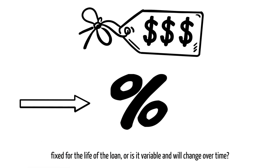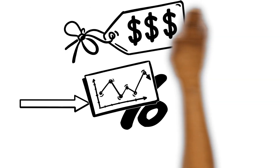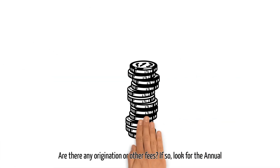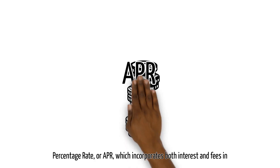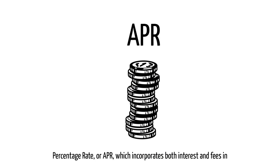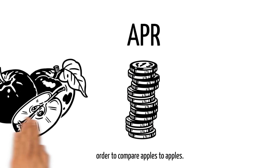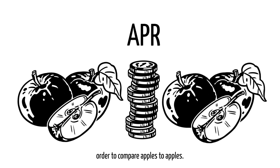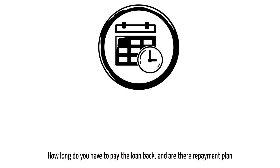Is that rate fixed for the life of the loan, or is it variable and will change over time? Are there any origination or other fees? If so, look for the annual percentage rate, or APR, which incorporates both interest and fees in order to compare apples to apples.